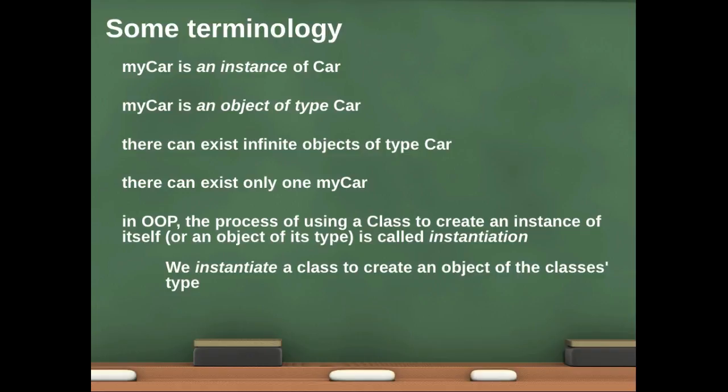So again, in object-oriented programming, when we take a class and we create an instance of it, or make an object of its type, remember interchangeable language, this is called instantiation. We instantiate a class to create an object of the class's type. So this is important language because throughout the course you'll hear me say we're working with an instance, or we're working with an object, or we perform this instantiation technique. So that's a very important word to know.